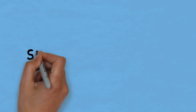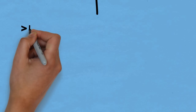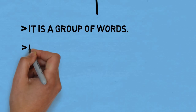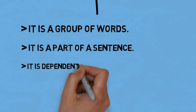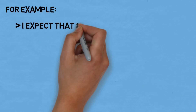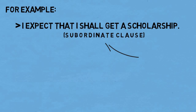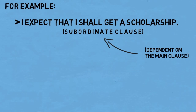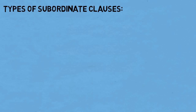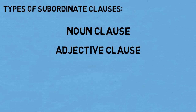Hello everybody, welcome to English Learners. In the previous video we discussed clauses and its basic divisions. Today we shall study subordinate clauses in detail. A subordinate clause is a group of words, it is a part of a sentence, it is dependent on the main clause and cannot stand alone. For example, 'I expect that I shall get a scholarship' — 'that I shall get a scholarship' is a subordinate clause. There are three types of subordinate clauses: noun clause, adjective clause, and adverb clause.